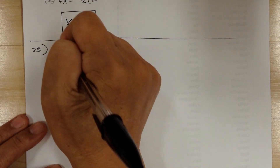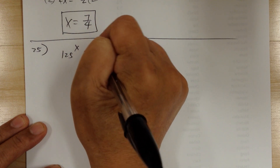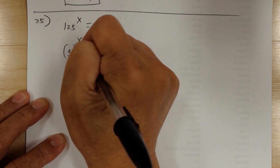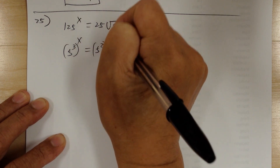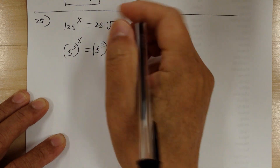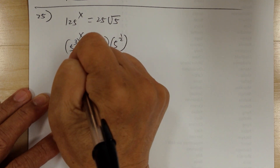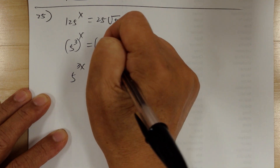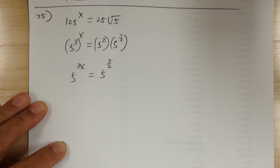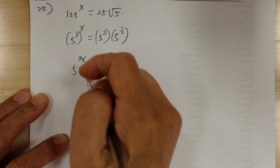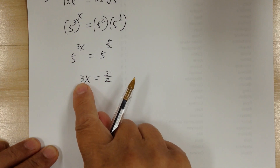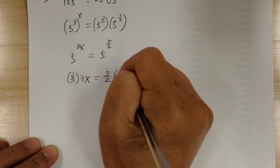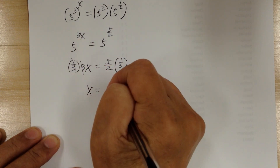Number 25: you've got 125 to the x equals 25 times square root of 5. Make everything the same base: 125 is 5 to the third, 25 is 5 squared, and square root of 5 is 5 to the one-half. Apply the third law to get 5 to the 3x, and on the right side use the first law — when you multiply, add the exponents — so 2 plus one-half is 5 over 2. Match the exponents: 3x equals 5 over 2. Multiply by one-third on both sides — don't divide or you'll get a complex fraction — so x equals 5 over 6.